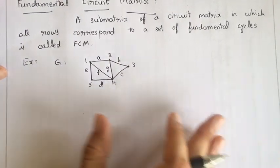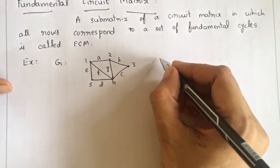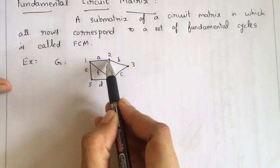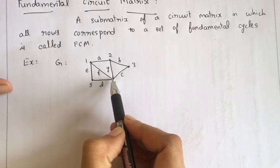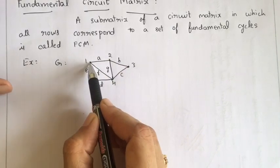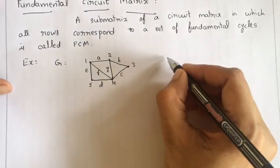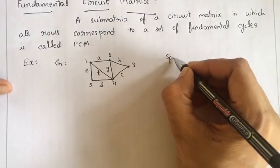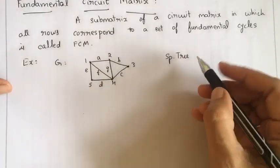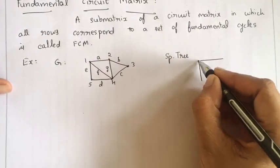With respect to this graph, consider a spanning tree which includes edges A, F, E, and C. The spanning tree with respect to G includes all vertices.